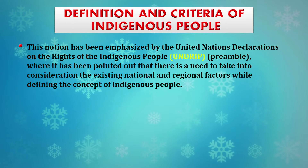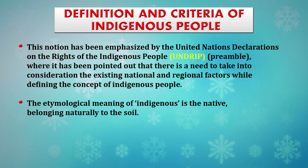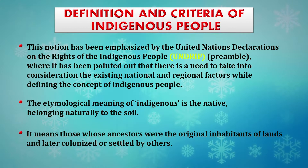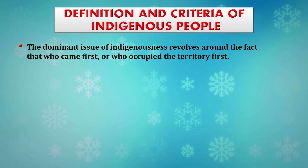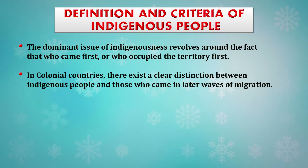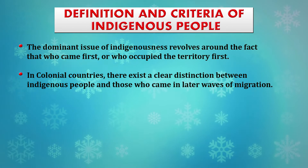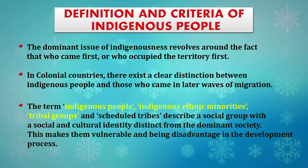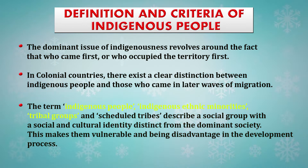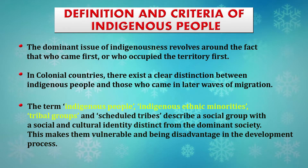The etymological meaning of 'indigenous' is 'native, belonging naturally to the soil.' It refers to those whose ancestors were the original inhabitants of lands later colonized or settled by others. The dominant issue of indigeneity revolves around who came first, or who occupied the territory first. In colonial countries there exists a clear distinction between indigenous people and those who came in later waves of migration. The term encompasses indigenous ethnic minorities, tribal groups, and scheduled tribes — describing a social group with a social and cultural identity distinct from the dominant society.